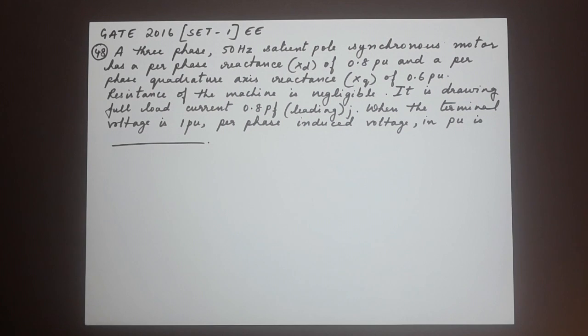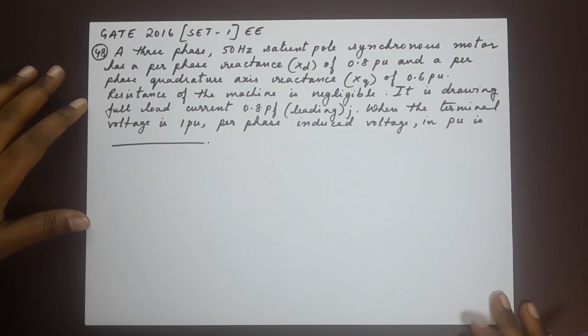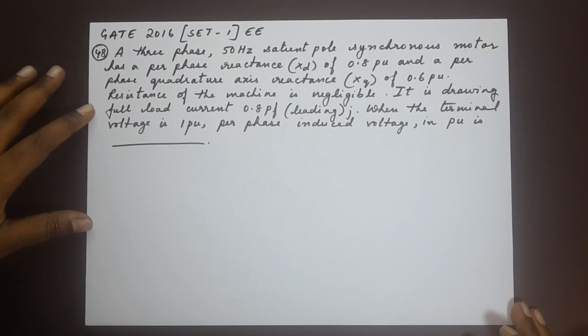Number 48. A three phase 50 Hertz salient pole synchronous motor has a per phase reactance XD of 0.8 PU and a per phase quadrature axis reactance XQ of 0.6 PU. Resistance of the machine is negligible. It is drawing full load current of 0.8 power factor leading. When the terminal voltage is 1 PU,